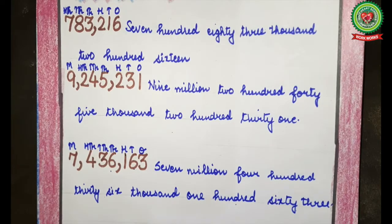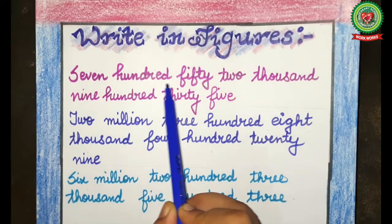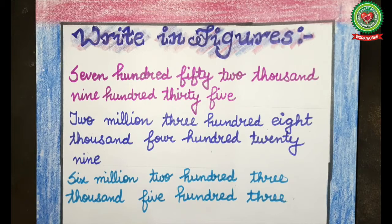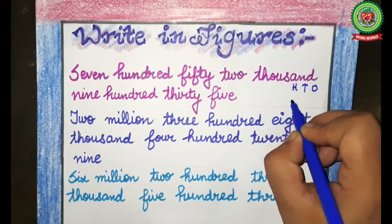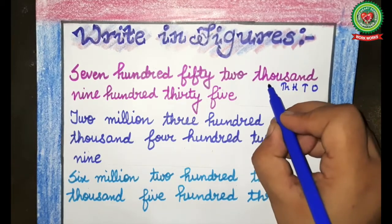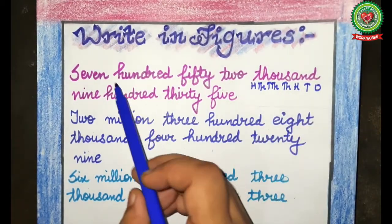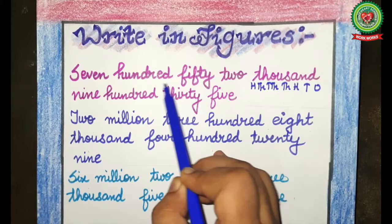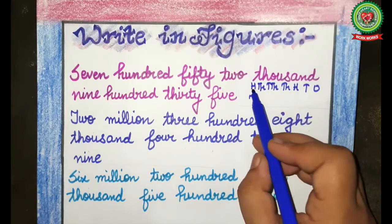Now let's understand how to write in figures. Example number one: seven hundred fifty-two thousand, nine hundred thirty-five. The first step is to write down the place value table: ones, tens, hundreds, thousands, ten thousands, and hundred thousands. Now let's read the statement again — 752 thousand means this complete number belongs to the thousands period. 700, so 7 will come under hundred thousands.